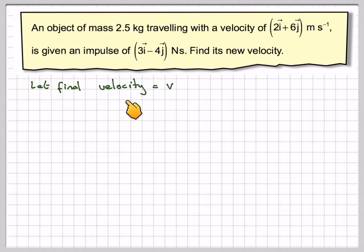Okay, let the final velocity be v. The initial velocity will be 2i plus 6j meters per second.